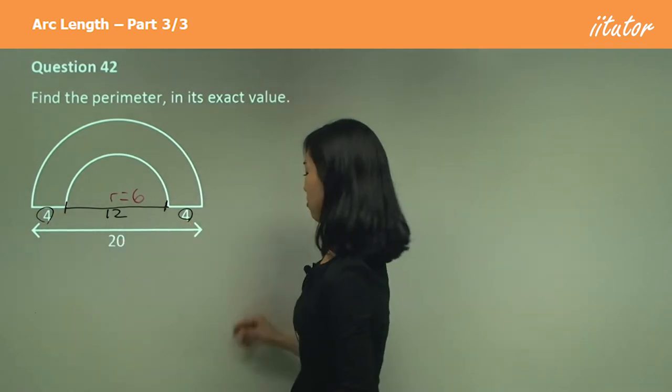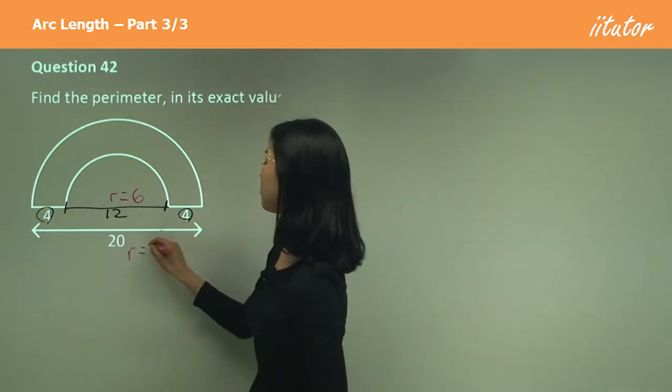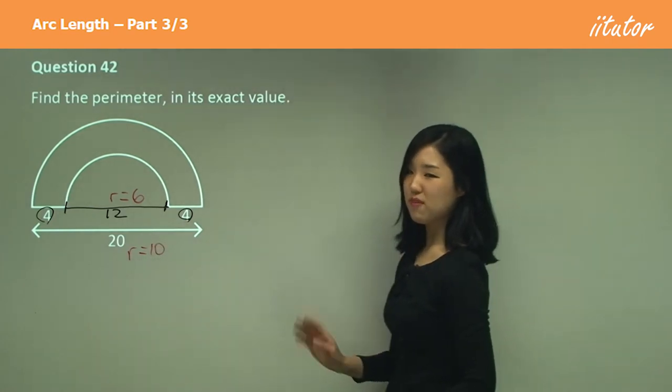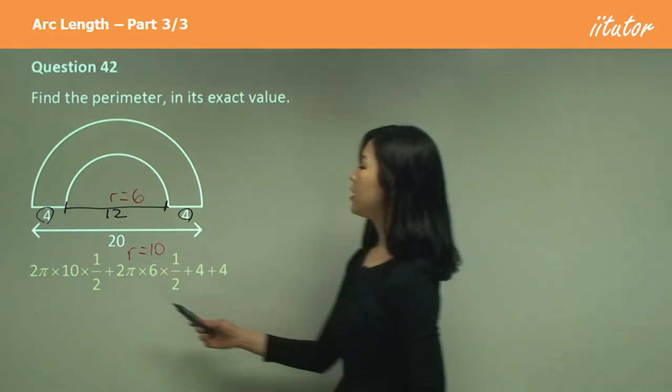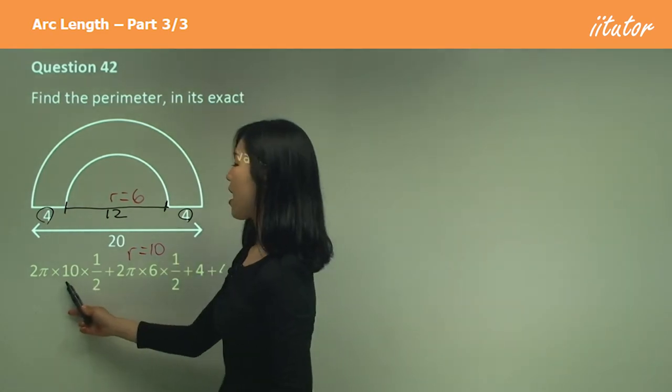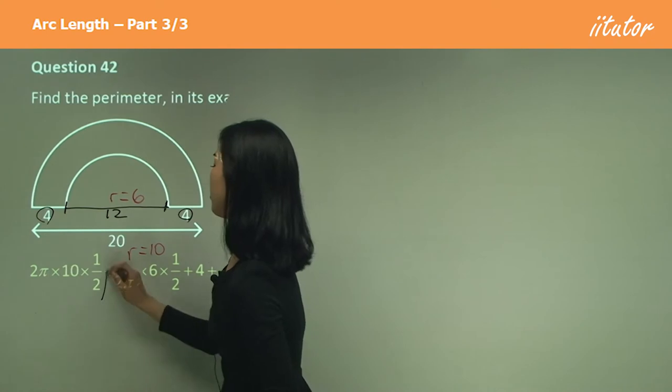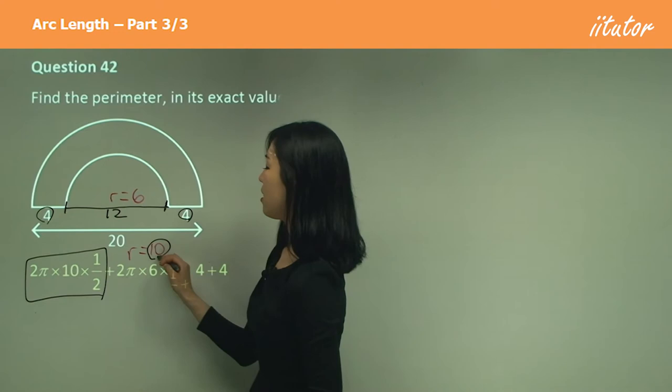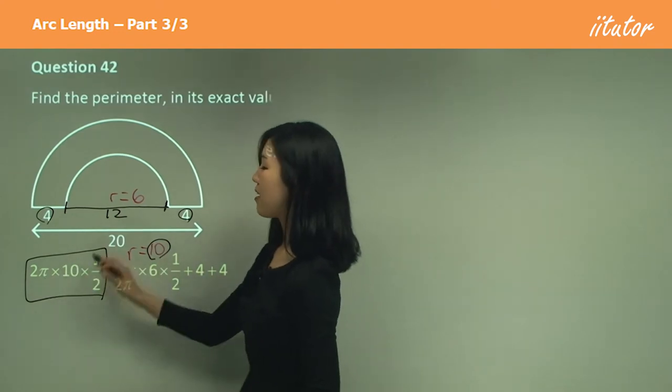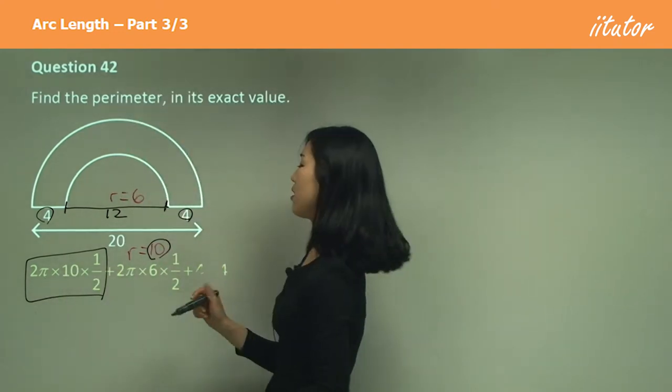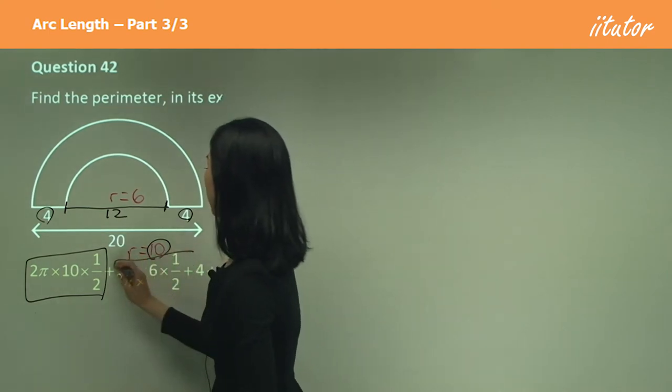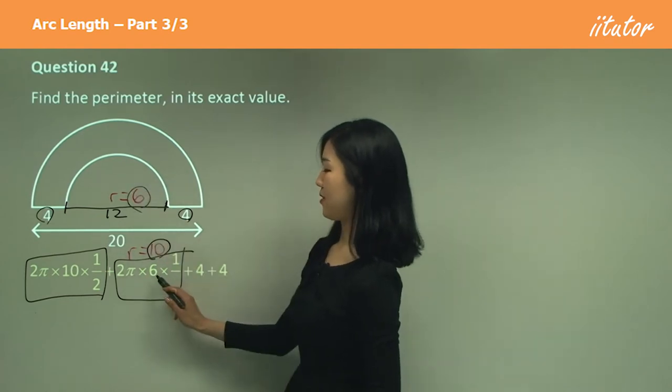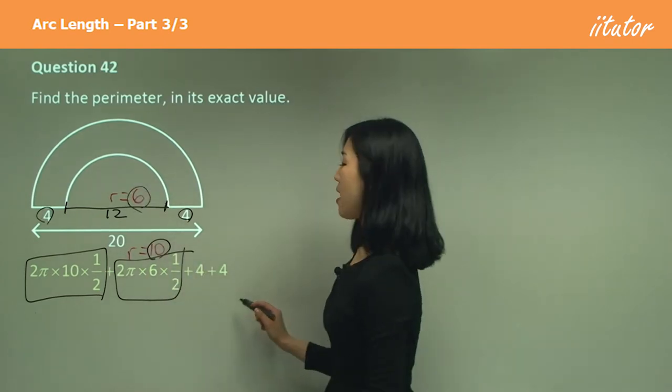Now for the bigger circle, we know that the diameter is simply 20, so what's the radius of the bigger circle? 10. Okay, so we've got the radiuses, should be very very simple. It should be 2π times 10, so this part here is for the bigger arc, 2πr, r is 10, so we do 2π times 10 times half because that's a half semicircle. Plus this part here is the smaller circle, 2π times 6 times a half, and then we have to add this side and this side, so 4 plus 4.